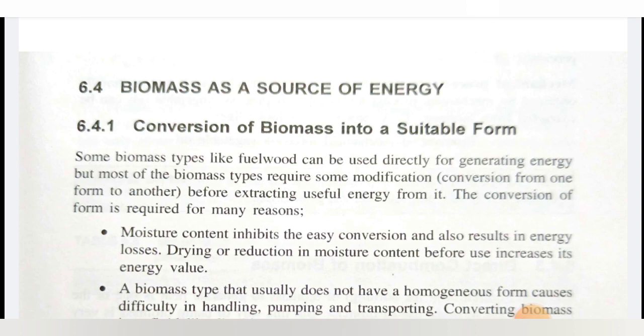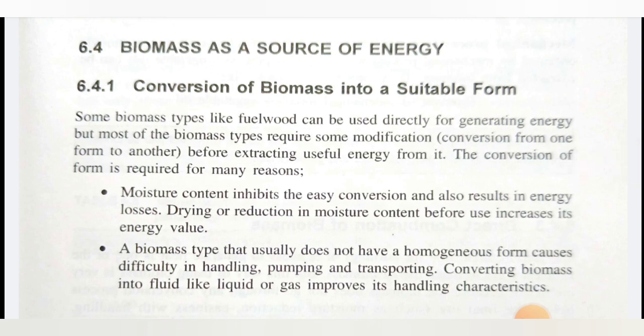Since the last so many lectures, we have seen many topics from unit number one to unit number five. Basically, the first four units are related to solar energy, then unit number five and unit number six are related to wind energy and biomass energy. In today's lecture, we are going to see one of the next topics — biomass as a source of energy and conversion of biomass into a suitable form. Different types of conversion processes are there for converting the biomass into a suitable form of energy.